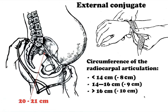Conjugata externa, or external conjugate, is the straight dimension of the pelvis. The woman is put on her side; the leg lying below is bent in the hip and knee joints, and the other leg is straightened. One end of the pelvimeter is set in the middle of the superior external border of the symphysis, and the other end is pressed to the suprasacral fossa, situated between the process of the fifth lumbar vertebra and the beginning of the first sacral vertebra.